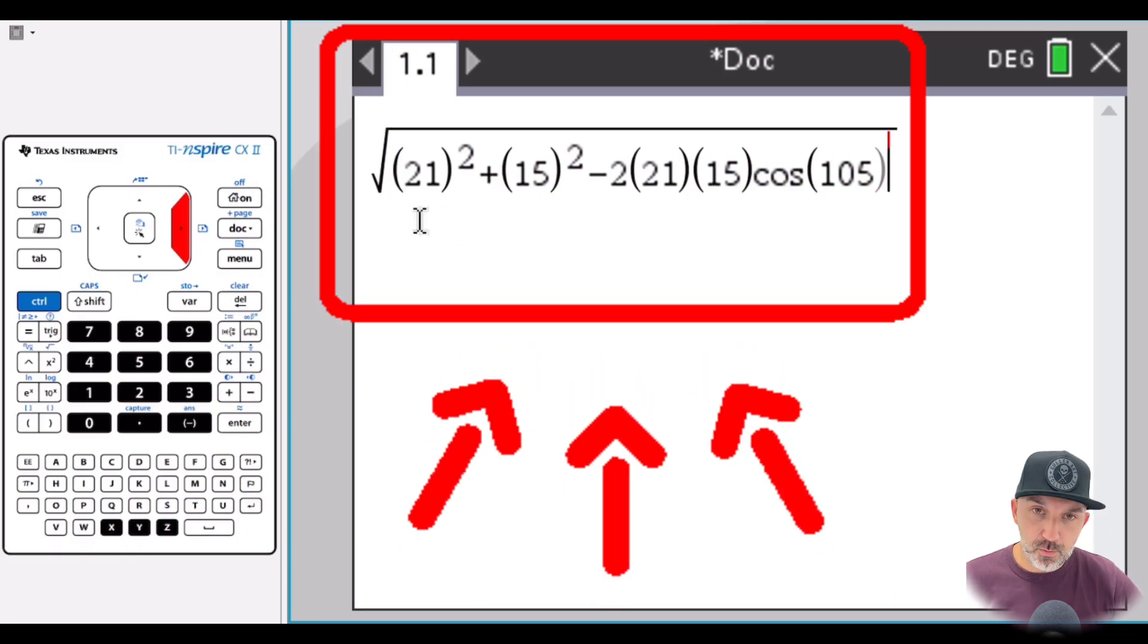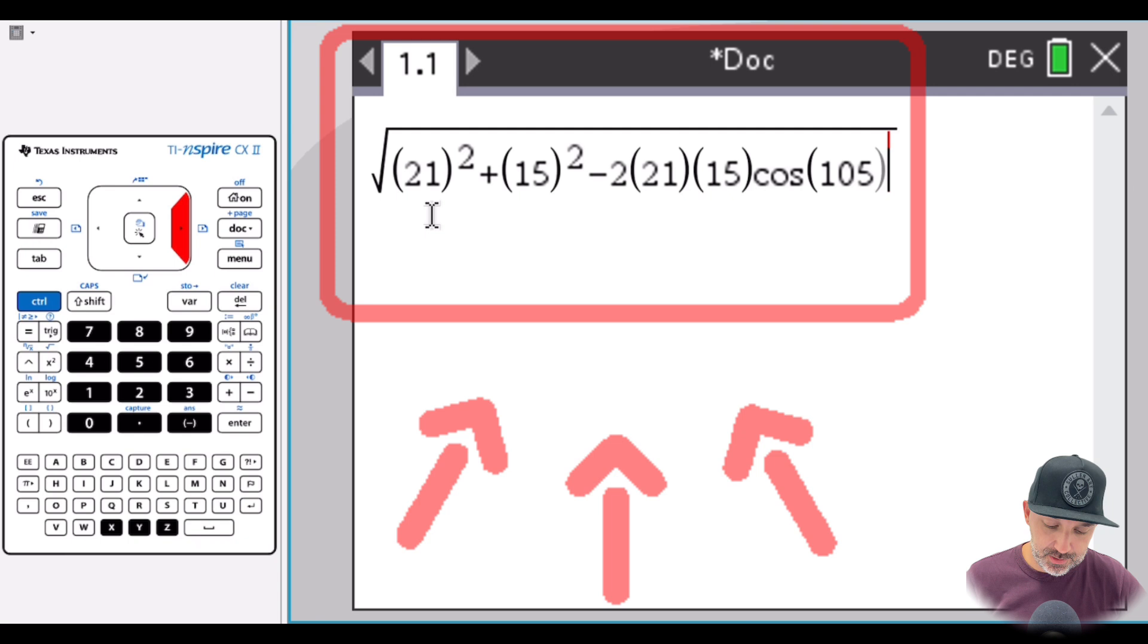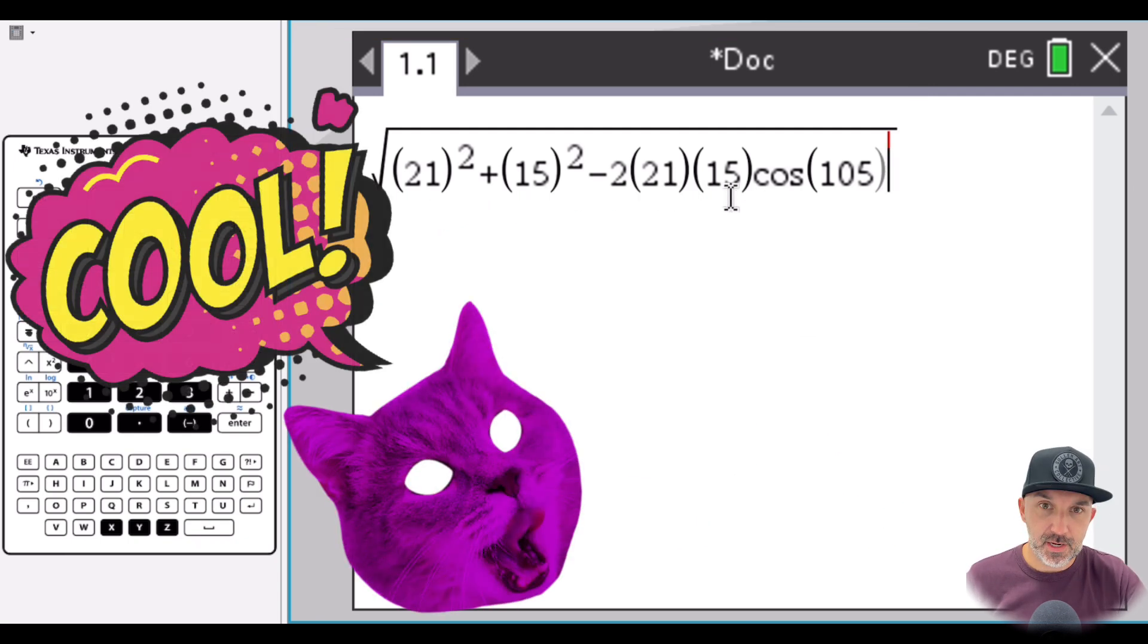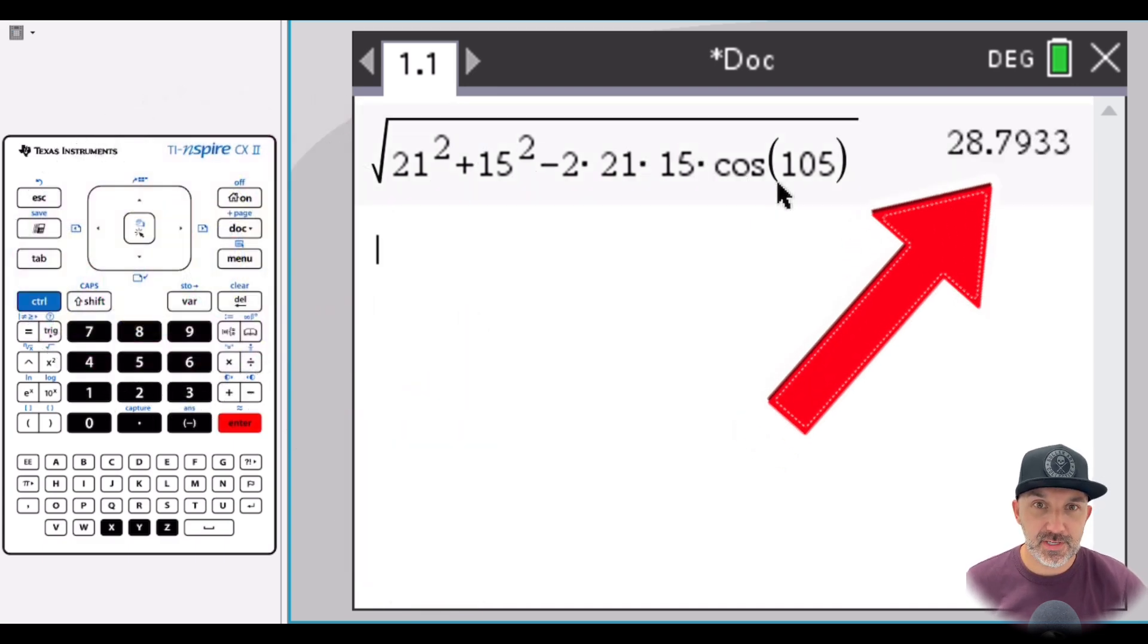I've just put all of that into the calculator here. So we got 21 squared, press Enter, and we get a length of 28.8, rounded to three significant figures.